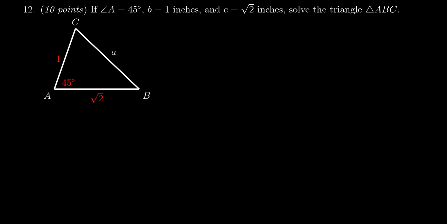We're given a triangle ABC and we're asked to solve for that triangle. The information we know is that the angle measure of A is 45 degrees, the length of side b is 1 inch, and the length of side c is the square root of 2 inches, which is about 1.4, but it's better to have the exact value there.